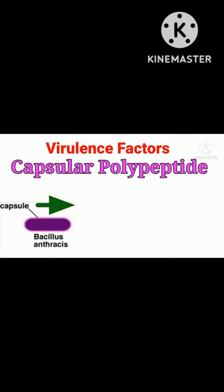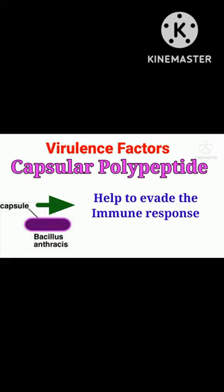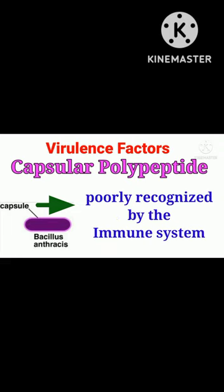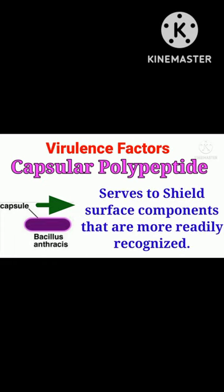Capsular polypeptide: the capsule of Bacillus anthracis is composed of poly-D-glutamic acid. The capsule contributes to pathogenesis by helping the bacterium evade the immune response. The structure of the capsule is poorly recognized by the immune system and also serves to shield surface components that are more readily recognized.